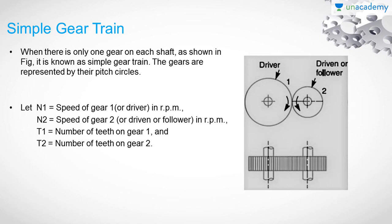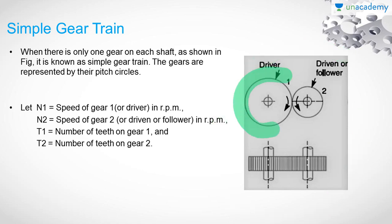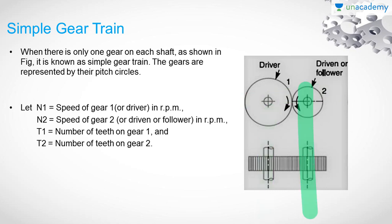In a simple gear train, there is only one gear on each shaft, as shown in this figure. This mechanism for the transmission of power and motion is called a simple gear train. The gears are represented by their pitch circle. As you can see in this figure, the view of the gear train is shown using pitch circles. This is the pitch circle of the driving gear and this is the pitch circle of the driven or follower gear. The driver gear rotates in a clockwise direction and the follower or driven gear rotates in the anti-clockwise direction. The axis of the shafts in this simple gear train system are parallel to each other.